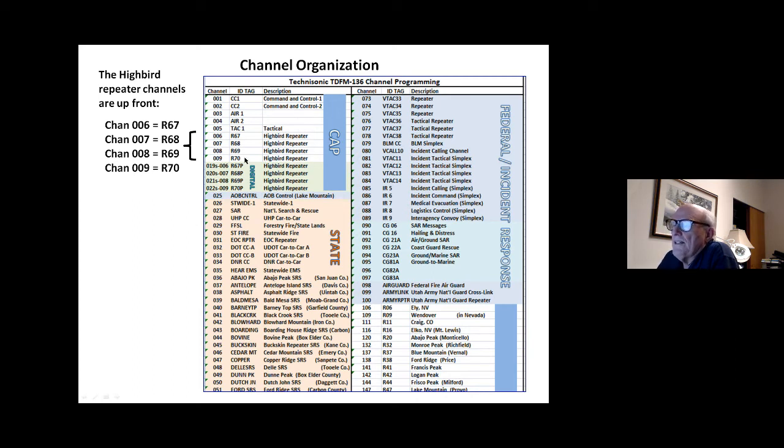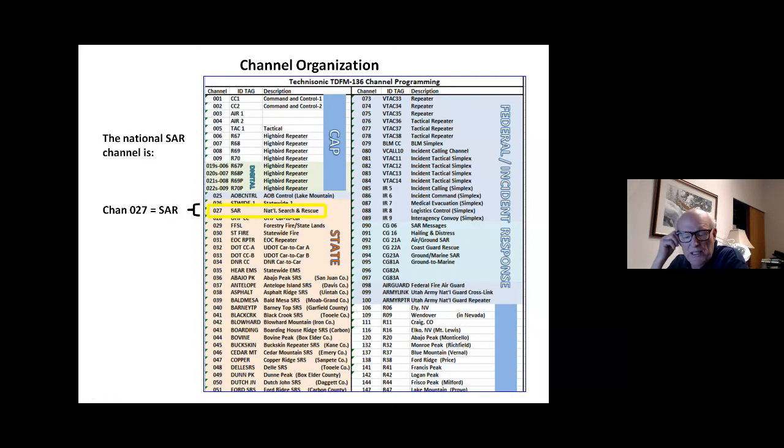Back on the left hand side the hybrid repeater channels are up front. We didn't make that determination in Utah Wing. That was made by the national headquarters staff and we just have to conform to their channels except for those we can program in ourselves which are the state and local channels down here in the salmon colored boxes. I get questions on every single mission. Where's R70? Because we dialed in at 170 and that's not R70. Well no, R70 is channel 9009 and the digital version is channel 22. So channel 9 for R70 is one you probably want to remember.